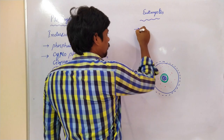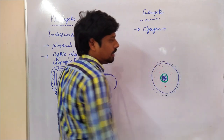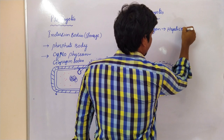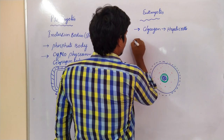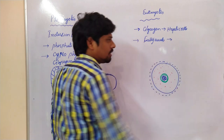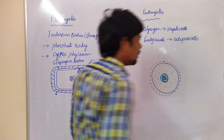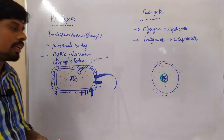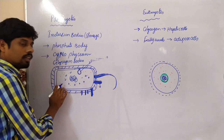Coming to the storage in eukaryotes: the storage material in eukaryotes is glycogen, stored in hepatic cells and muscle cells. Hepatic cells are present in the liver. Fatty acids are also stored in adipose cells. These are the storage materials present in eukaryotes and prokaryotes.